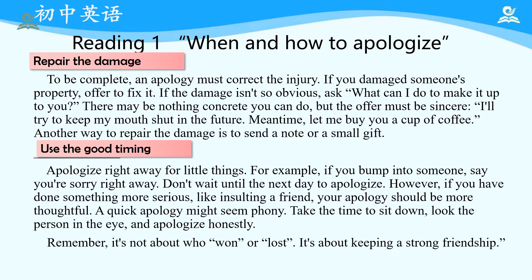The next part is 'Use the Good Timing.' Time here is used as a verb. 我们要选择合适的时机。What is good timing? It depends on different situations. If you are in conflict over little things, you need to say sorry right away, immediately — don't wait. But if you have done something more serious, like insulting a friend, your apology should be more thoughtful and more careful. A quick apology might seem phony. Take the time to sit down and look the person in the eye and apologize honestly. So time can be a sign of honesty here.